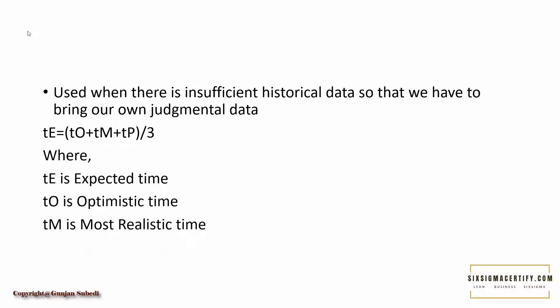And here tE is the expected time, tO is the optimistic time, and tM is the most realistic time. And as I told you, if we are estimating the cost, this tE, tO, tM can be replaced by the CE, CO, and CM denoting expected cost, optimistic cost, and the most realistic cost.